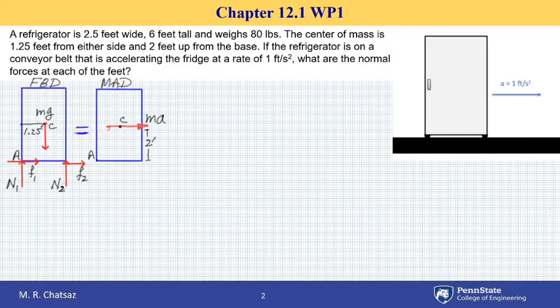If the refrigerator is on a conveyor belt that is accelerating the refrigerator at a rate of 1 foot per second squared, what are the normal forces at each of the feet?